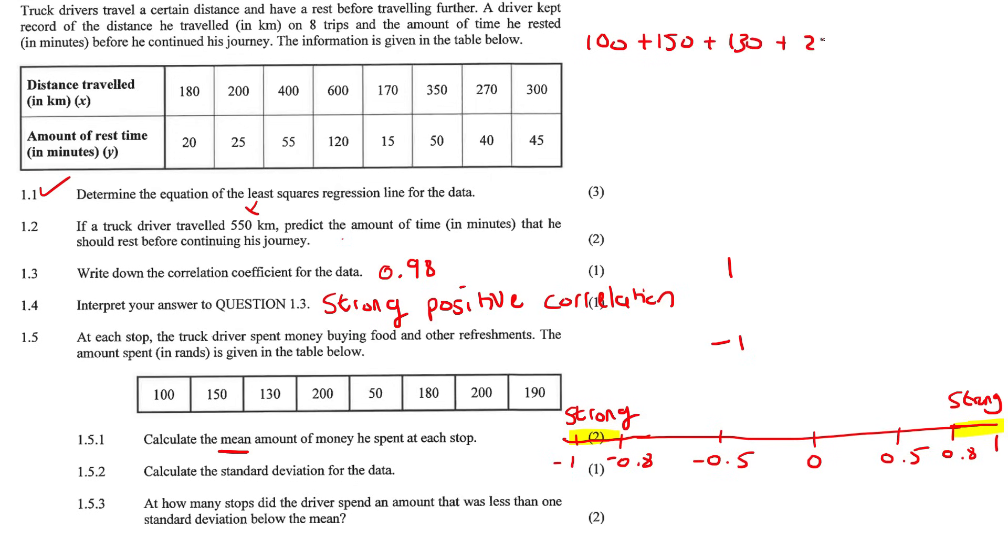If you know how to do that method, you can do it. 100 plus 150 plus 130 plus 200 plus 50 plus 180 plus 200 plus 190, divided by how many numbers there are, which is 8, and that's 150 rand. So on average, this person spends about 150 rand each stop.